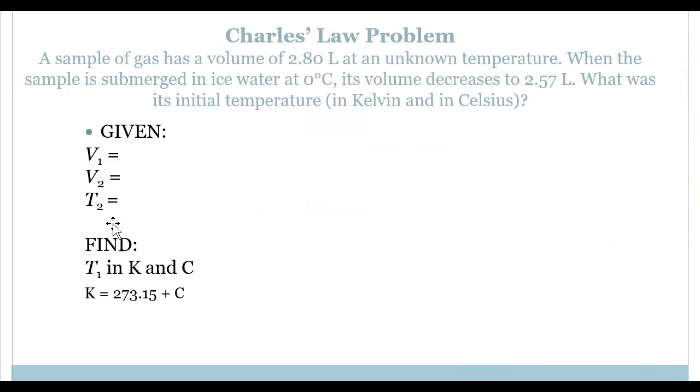If we do a practice problem, a sample of gas has a volume of 2.80 liters at an unknown temperature. When the sample is submerged in ice water at 0 degrees Celsius, the volume will decrease to 2.57 liters. We need to find T1. Our prediction: we see that V2 is going to decrease, which means that T2 has to have decreased from T1. So we should expect T1 to be increased compared to T2.